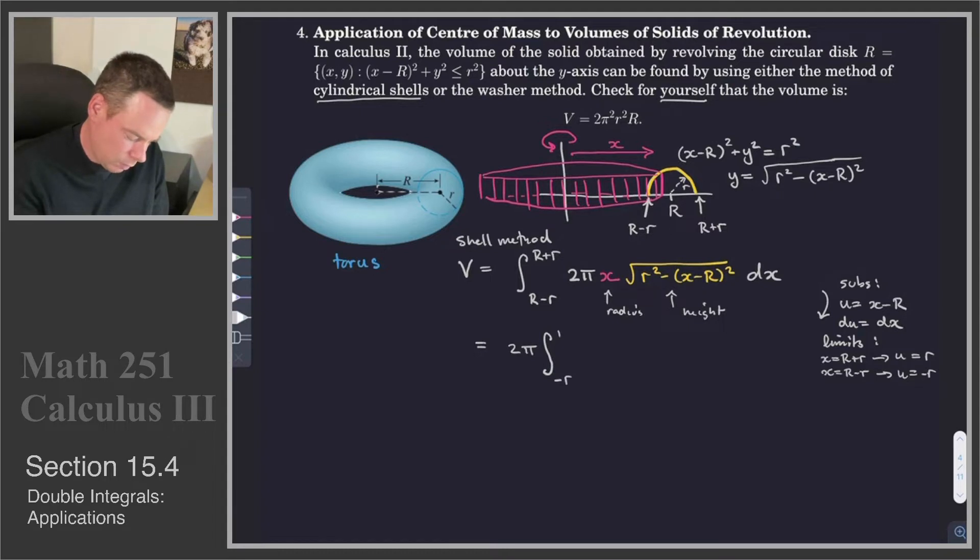So the new integral is from -r to r, 2π, and then we've got x, but our x is now u + R. Under our square root, we have r² - u², and dx becomes du. So there's the integral we need to compute.